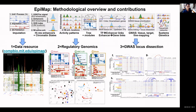The contributions are threefold. First, a data resource available at compbio.mit.edu/epimap, which is browsable and interactive — you can download specific combinations of data and browse regulatory genomics and disease dissection results. Second, insights on regulatory genomics: what are the modules of enhancers acting together, their target genes, upstream regulators, motifs, and combinations across many human tissues? Third, systematic dissection of complex trait loci, including examples such as coronary artery disease across liver and heart loci.